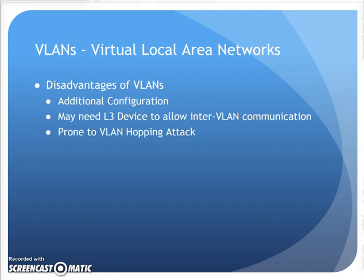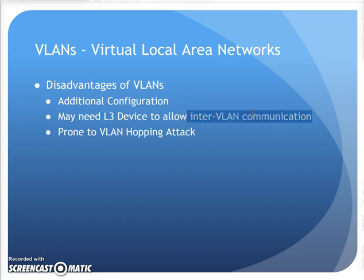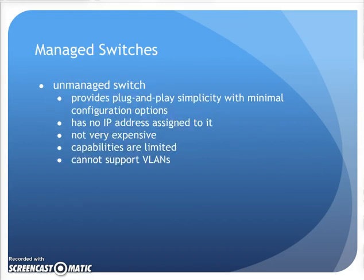Disadvantages: it is additional configuration and additional things I can get wrong. More times than not, I need a layer 3 device connected to my switch to permit or deny what's called inter-VLAN traffic — communication between two different VLANs. I need a layer 3 to get the job done on that one. And it is also prone to VLAN hopping attacks, which they mention at the end of the chapter. So that is one of the disadvantages of VLANs.